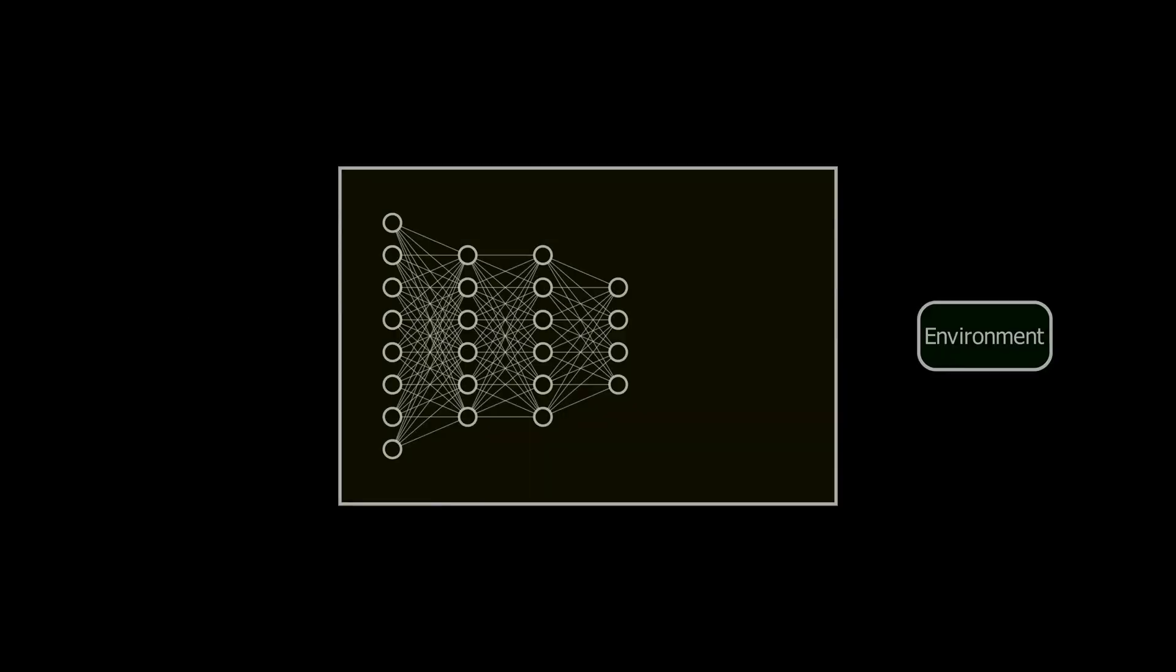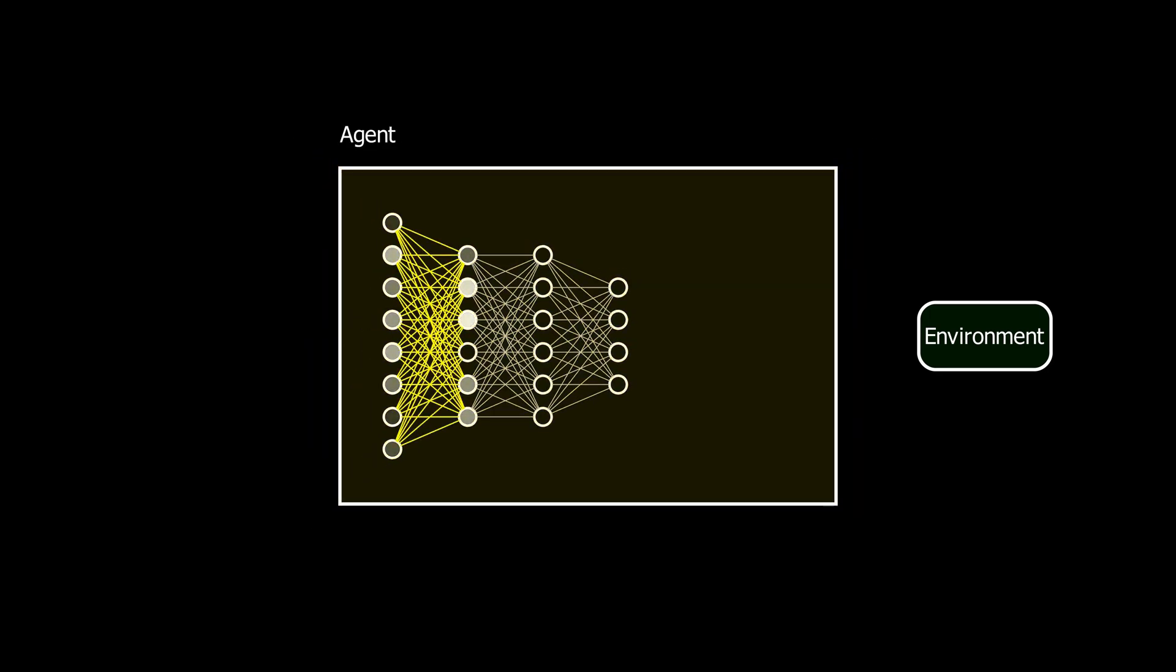In a reinforcement learning system, the decision-making entity is called an agent. It interacts with the environment by taking actions and receiving rewards. Before I get into the more general case, let's see what these fundamental reinforcement learning concepts look like in the game of tic-tac-toe.